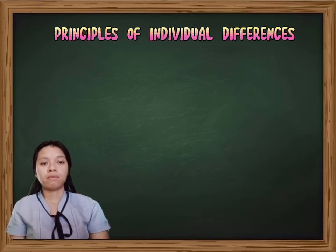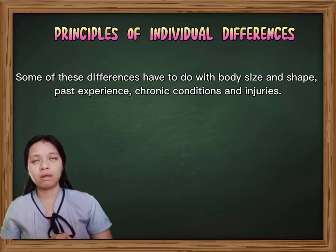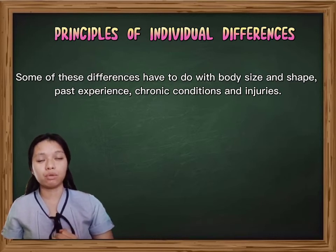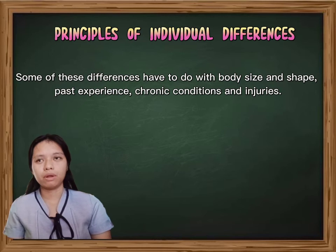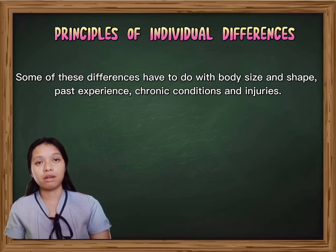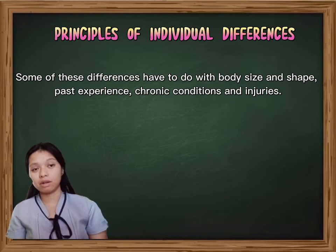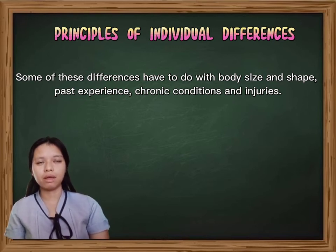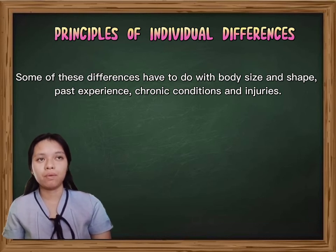Some of the individual differences have to do with body shape or body size. Past experiences also matter — for example, if you previously had a knee injury and it hasn't fully healed yet, instead of jogging you can do walking for about 30 minutes, or dancing. Chronic conditions also apply — for example, if you have a heart condition, you need to adjust your exercise, such as doing dancing or walking for about 30 minutes a day. If you have an injury, you need to adjust and not push yourself too hard when it comes to exercising.